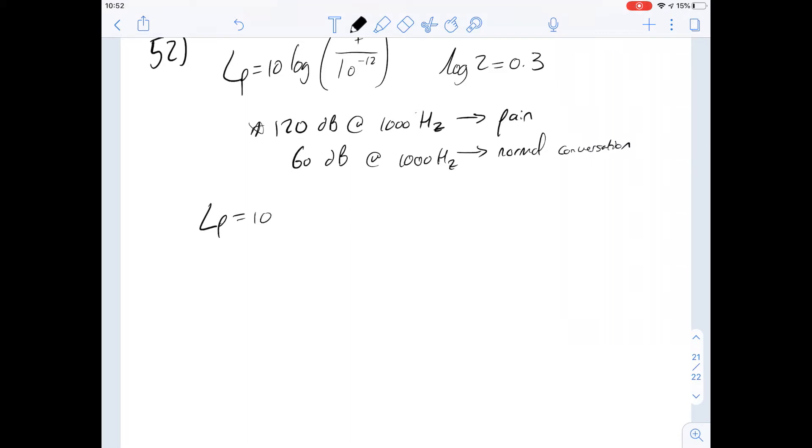We've got an equation here which is LP equals 10 log the intensity which we're going to use in a minute divided by 10 to the minus 12. We know that the value for LP is going to be 120 equals 10 log to the base 10 of i over 10 to the minus 12.